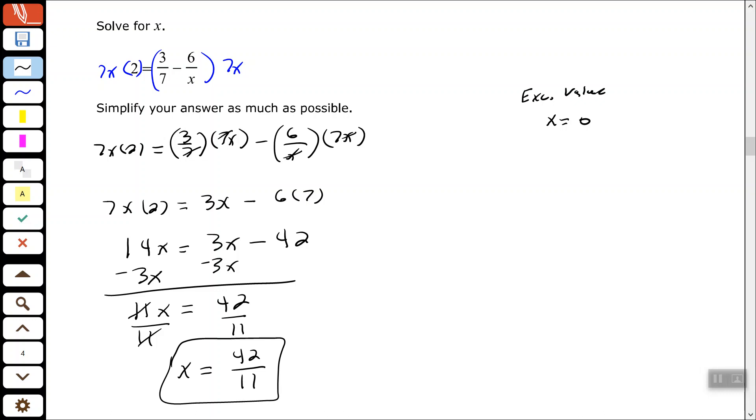But what we did, we found the least common multiple of our denominators, which was 7x. We multiplied everything by 7x, simplifying to clear the fractions. And then we solved the equation. All righty, good people. Hope you found this video to be helpful. And I will see you on the next one. Thank you.